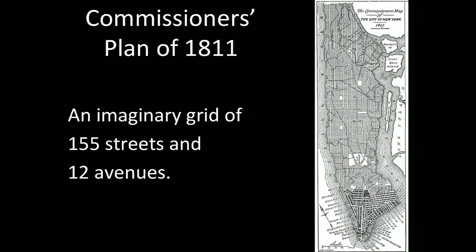So the Manhattan Grid was planned in 1811, but at that point it was really just an imaginary grid of 155 streets and 12 avenues. But it ended up becoming a real grid. If you visit Manhattan today, it's all there.